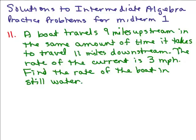Here's the next problem from the Intermediate Algebra Practice Problems for Midterm 1. A boat travels 9 miles upstream in the same amount of time it takes to travel 11 miles downstream. The rate of the current is 3 miles per hour. Find the rate of the boat in still water.